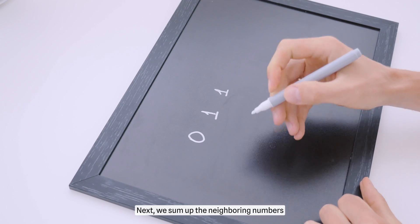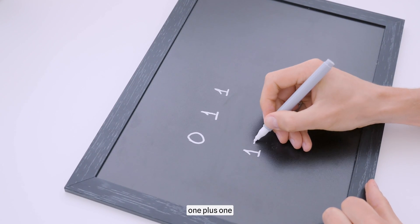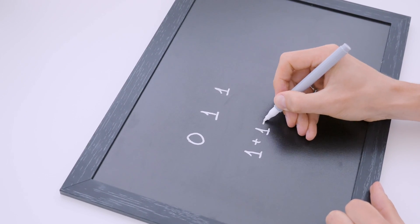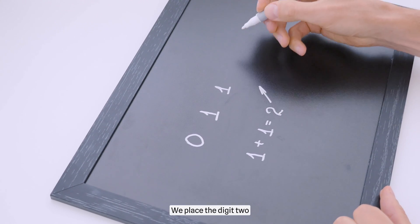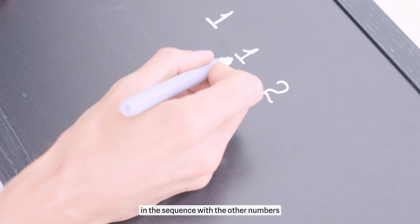Next we sum up the neighboring numbers, 1 plus 1. As a result we get the digit 2. We place the digit 2 in the sequence with the other numbers.